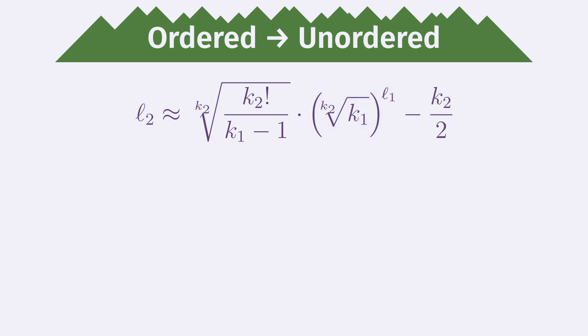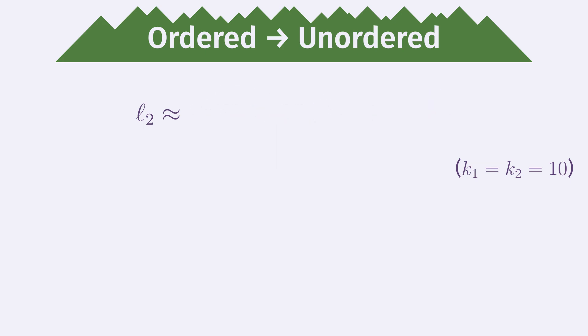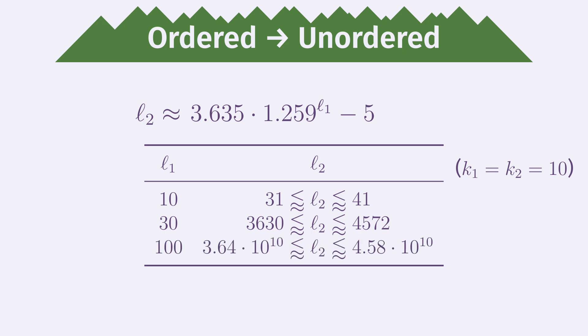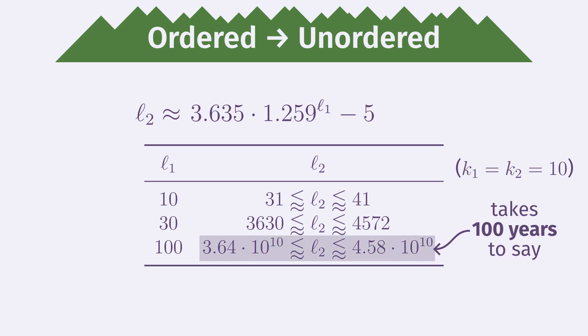Let's put some concrete numbers in. I estimate English has an effective phoneme count of very roughly 10, so let's say K1 and K2 are both 10. If we have a very short ordered sentence of L1 = 10 phonemes, then L2 is a reasonable 31 to 41 phonemes. For a medium-sized sentence with L1 = 30 phonemes, L2 is around 3,600 to 4,600 phonemes — more than 100 times the length. A somewhat long sentence can easily contain more than 100 phonemes, and L1 = 100 would translate to L2 of around 36 billion to 46 billion phonemes, which would take around 100 years to say. So yeah, no wonder word order is a thing!